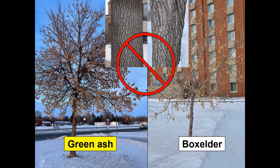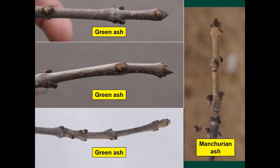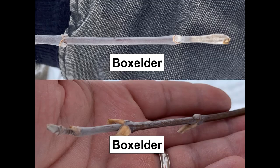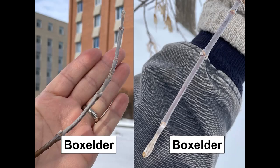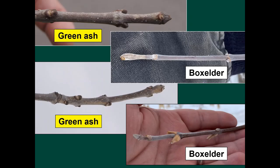Identifying the difference between ash and box elder doesn't depend on the seeds, or the bark, or the branch arrangement, or the leaves. The key to differentiating between ash and box elder is the twigs. Green ash twigs are usually gray — so are black ash and white ash. Manchurian ash has a yellowish tinge. Box elder twigs have a whitish waxy bloom on them, and the base color behind that white bloom is usually a bluish purple. The buds of box elder are also white, while those of ash are usually tan or black. When seen side by side, the difference should be clear.